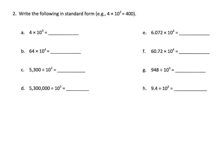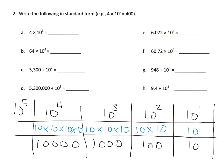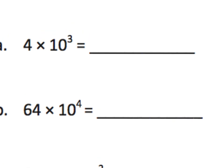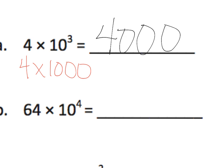Now we're supposed to be writing in standard form. Using the same chart from our previous slide, four times 10 to the third power means we're going to do four times 1,000, which is equal to 4,000.